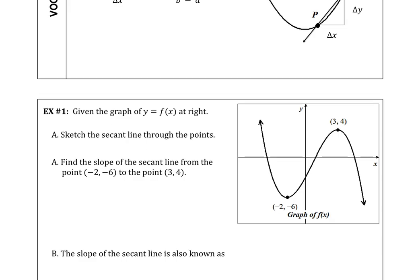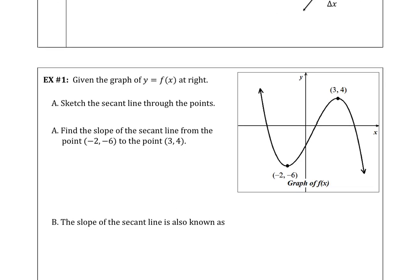Moving on to example one, we want to sketch the secant line through the points shown on the graph and find the slope of the secant line from the first ordered pair to the second point. The slope of the secant line is the average rate of change between the two points. So y2 is 4 minus y1, that's negative 6, divided by x2, which is 3, minus x1, which is negative 2. So 4 minus negative 6 is 10, and 3 minus negative 2 is 5, giving a slope of 2. The slope of the secant line is also the average rate of change of the function over the closed interval from negative 2 to 3, inclusively.